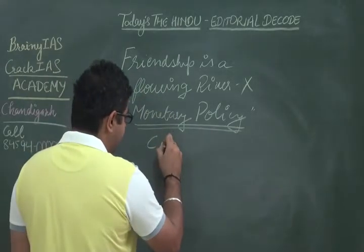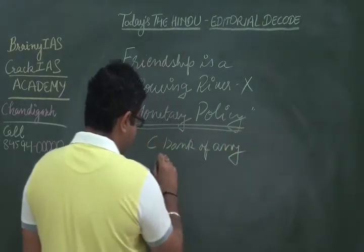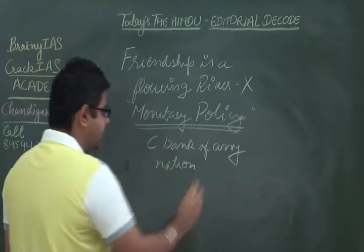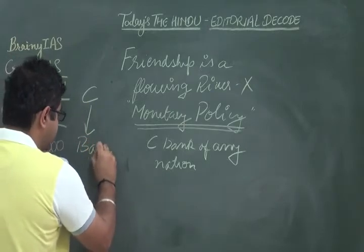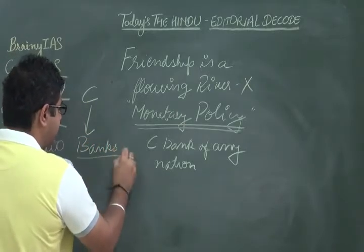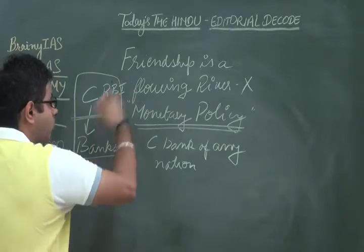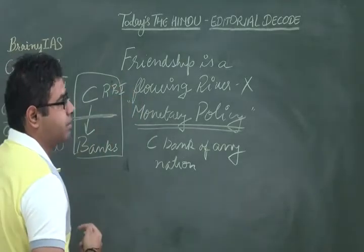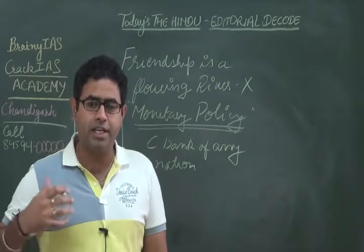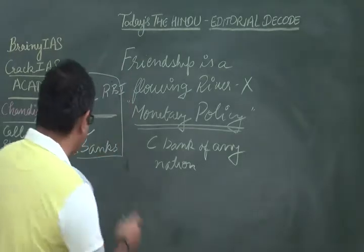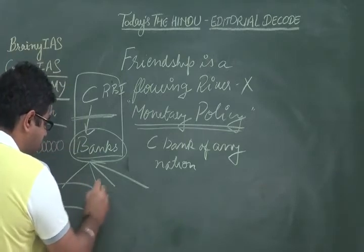What is meant by monetary policy? Monetary policy is a policy of the central bank of any nation, by which the central bank decides how it is going to lend to the banks — what the relationship between the RBI and the other banks will be, and how they will be exchanging money. The rate of exchange of money between the banks and the central bank decides how banks will lend to customers, including the corporate class.